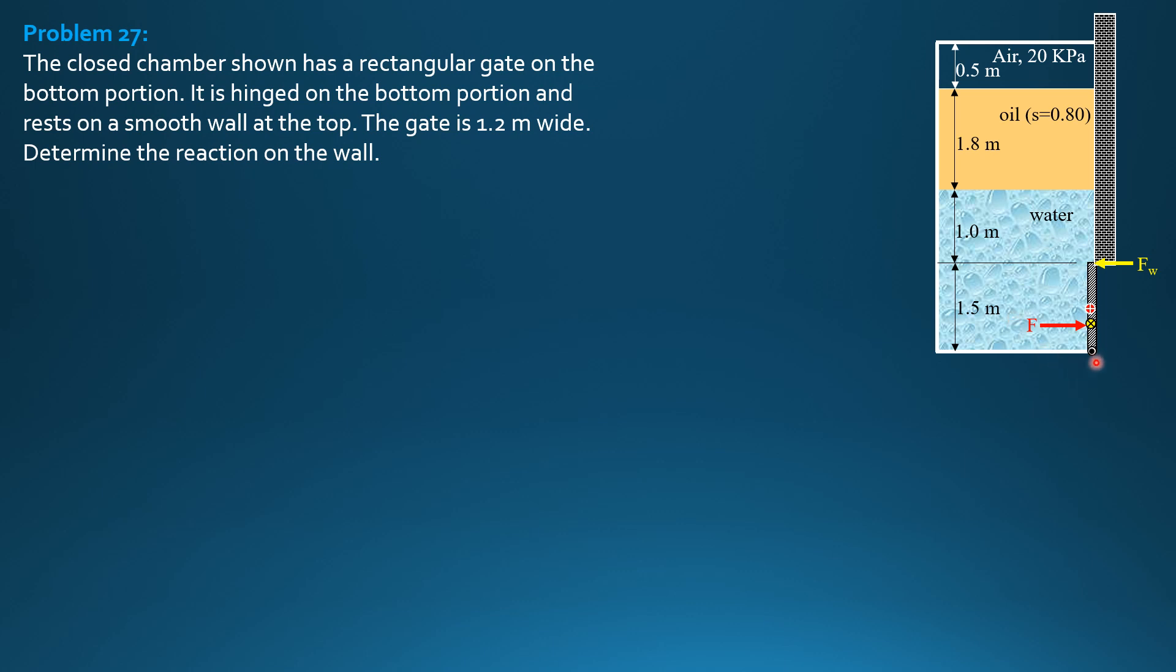So if we sum up moments about the hinge equals 0, the hinge reactions are not presented because they are not involved in the moment summations. So counterclockwise moment, FW times 1.5 equals F times quantity 0.75 minus E sub V. So distance of centroid to hinge is half of 1.5, 0.75, and distance of centroid to center of pressure is E sub V. So that's why moment arm of F is 0.75 minus E sub V.